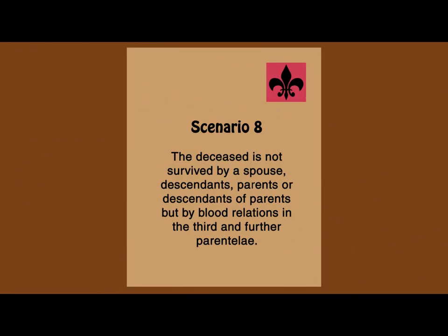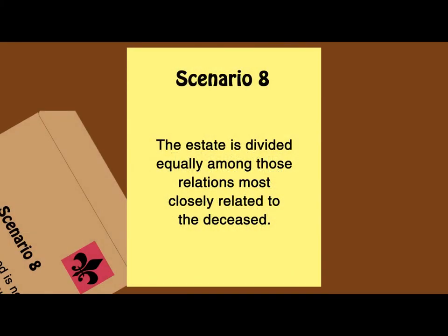In scenario 8, the deceased is not survived by a spouse, descendants, parents or descendants of the parents, but by blood relations in the third and further parentela. Where the deceased is not survived by a spouse, descendants or descendants of the parents, the nearest blood relations will inherit. This is where the degree of consanguinity is important. The estate will be divided equally amongst those relations who are most closely related to the deceased. In the third and further parentela, the estate is not divided by stirpes and representation is not allowed. Division takes place per capita according to the principle that the nearest blood relation inherits the estate. It is therefore necessary to work out the degrees of the relationship to see who is more closely related to the deceased.